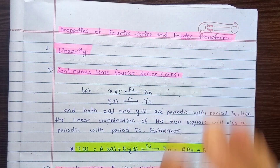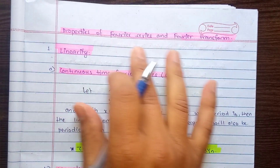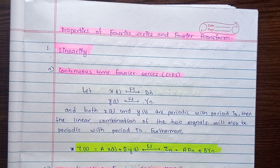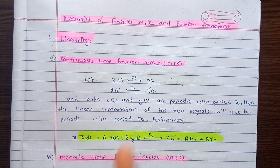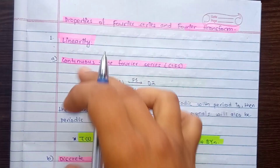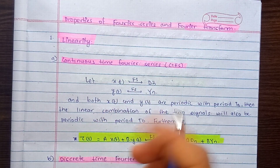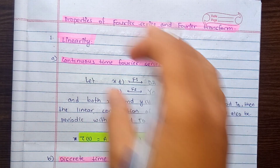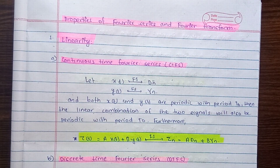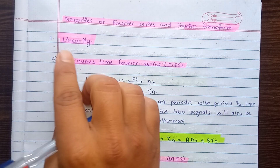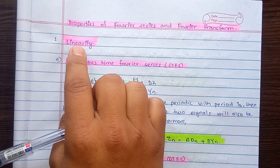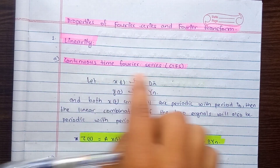The Fourier Series and the Fourier Transform are both important for continuous time and discrete time signals. We have to learn them in the same way, though the linearity property will differ between them.